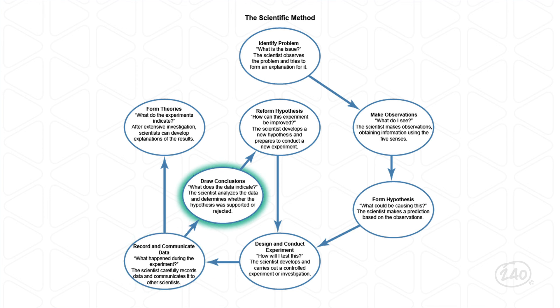Step six: the scientist draws a conclusion stating whether the hypothesis was supported or rejected. Step seven: the scientist reforms the hypothesis and designs a new experiment. Students should understand that following the scientific method often results in a feedback loop, where the results lead to more possible hypotheses and continued testing. Remember, the goal of the science teacher is to provide a learning environment designed to encourage opportunities for hands-on experiments that lead students through the process of the scientific method.